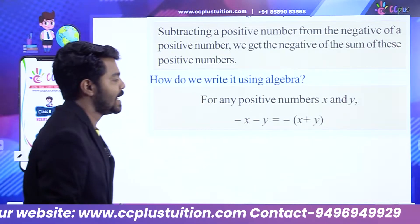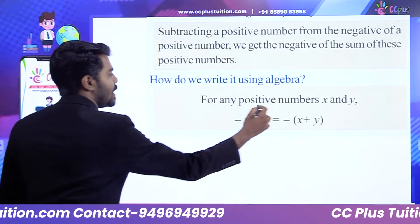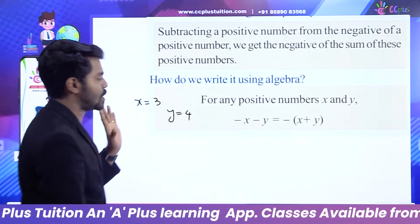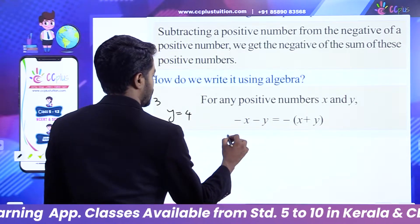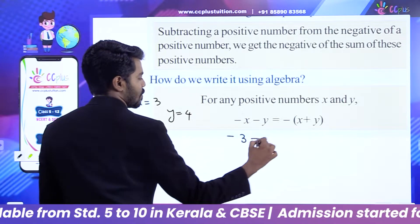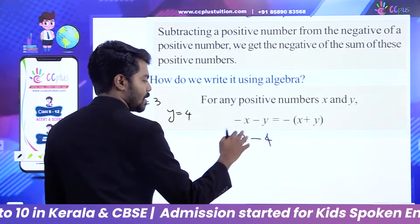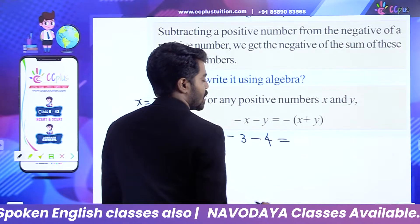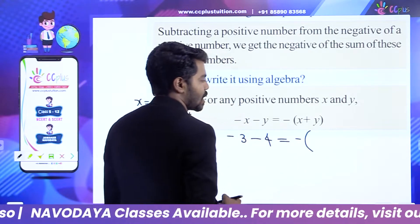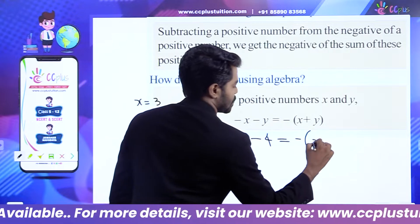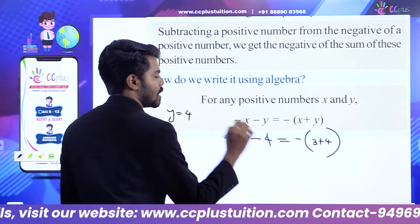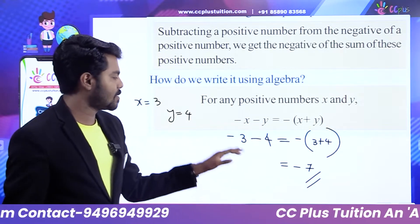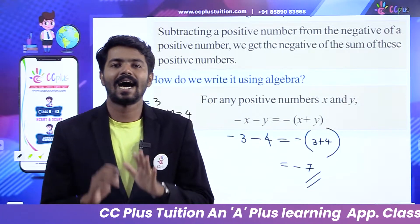Let's look at this equation. For any positive numbers x and y, minus x minus y is equal to minus of x plus y. For example, let x equals 3 and y equals 4. That means minus 3 minus 4 is equal to minus of 3 plus 4, which is minus 7.